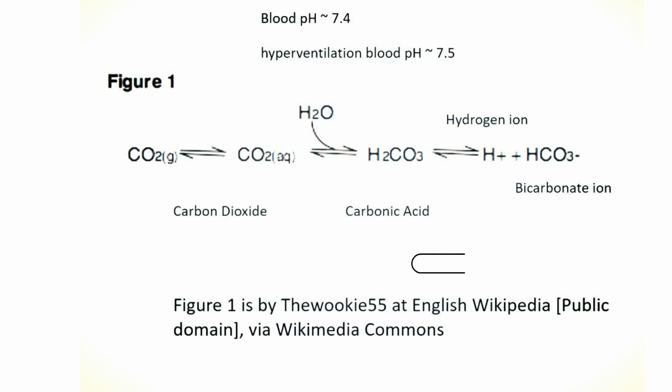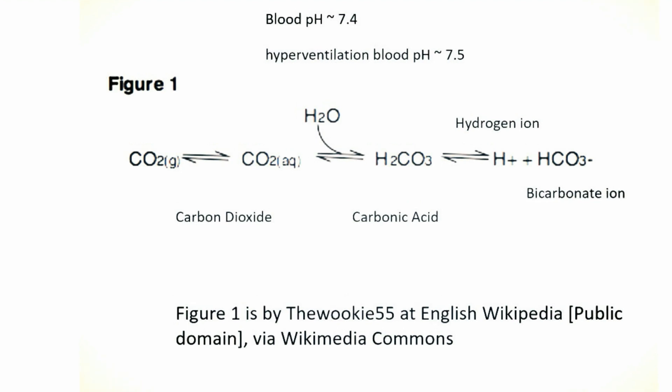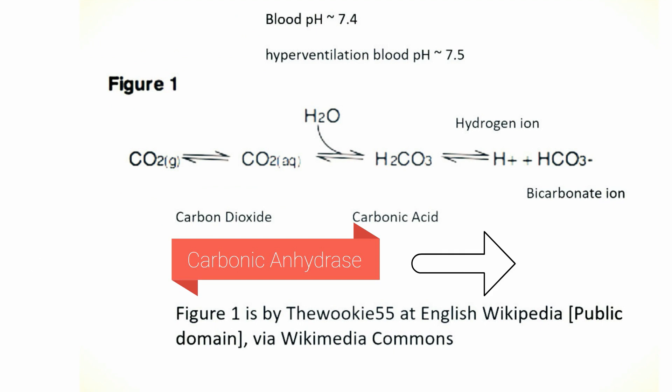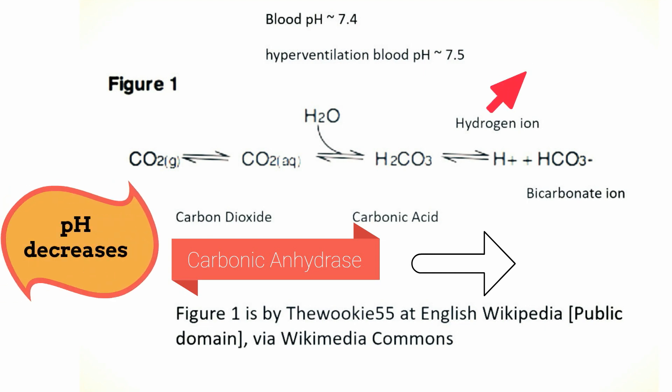When carbon dioxide from our cells interacts with the blood plasma, which is mostly water, it forms carbonic acid. This carbonic acid can also dissociate into bicarbonate and hydrogen ions. By definition carbonic acid is an acid, and when it dissociates into hydrogen ions you see the right part of the equation. If you add more carbon dioxide to the system, you increase the amount of carbon dioxide and actually push the reaction to the right. This is what happens in the presence of the enzyme carbonic anhydrase.